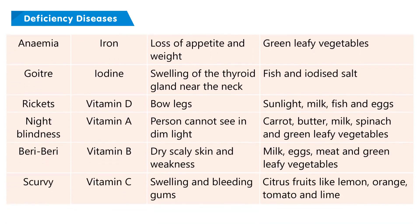Anemia: deficient nutrient — iron; symptoms — loss of appetite and weight; sources — green leafy vegetables. Goiter: deficient nutrient — iodine; symptoms — swelling of the thyroid gland near the neck; sources — fish and iodized salt. Rickets: deficient nutrient — Vitamin D; symptoms — bow legs; sources — sunlight, milk, fish, and eggs.